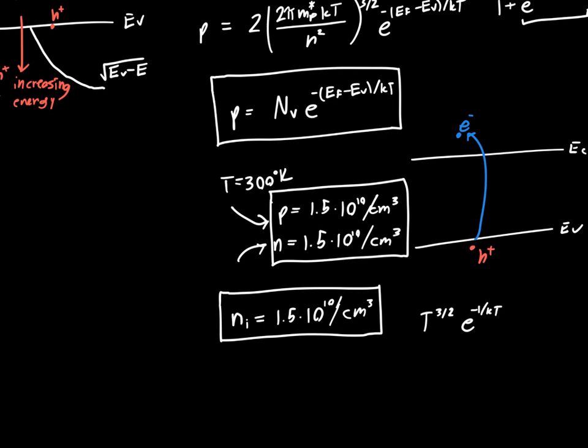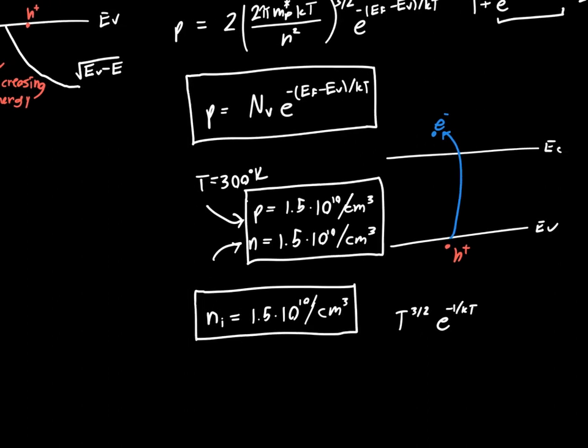Fundamentally, we'll get to why this is later, but it has to do with the thermal process of generation itself. Now we have expressions for the number of electrons and the number of holes per unit volume. We actually have some numbers for the electron-hole concentrations, and we know how to calculate them.